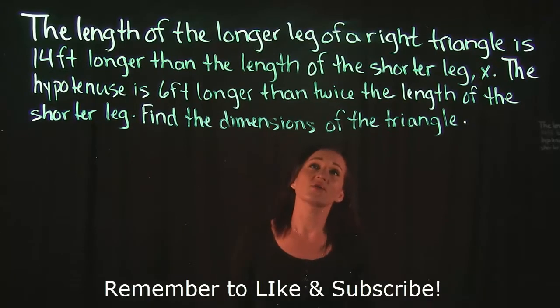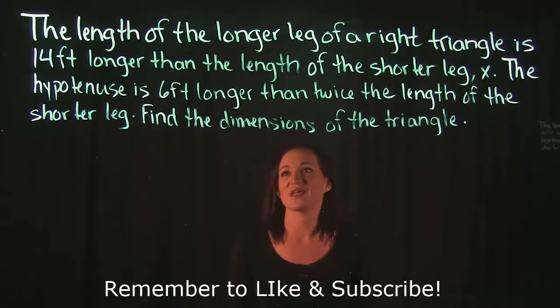The length of the longer leg of a right triangle is 14 feet longer than the length of the shorter leg X. The hypotenuse is 6 feet longer than twice the length of the shorter leg. Find the dimensions of the triangle.